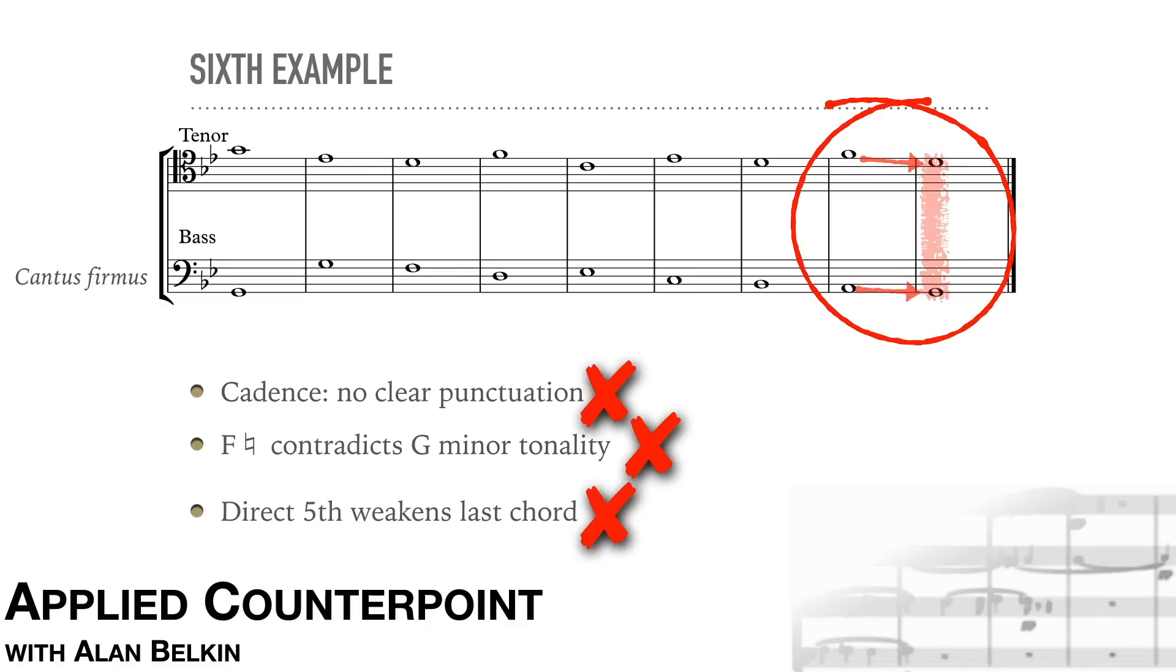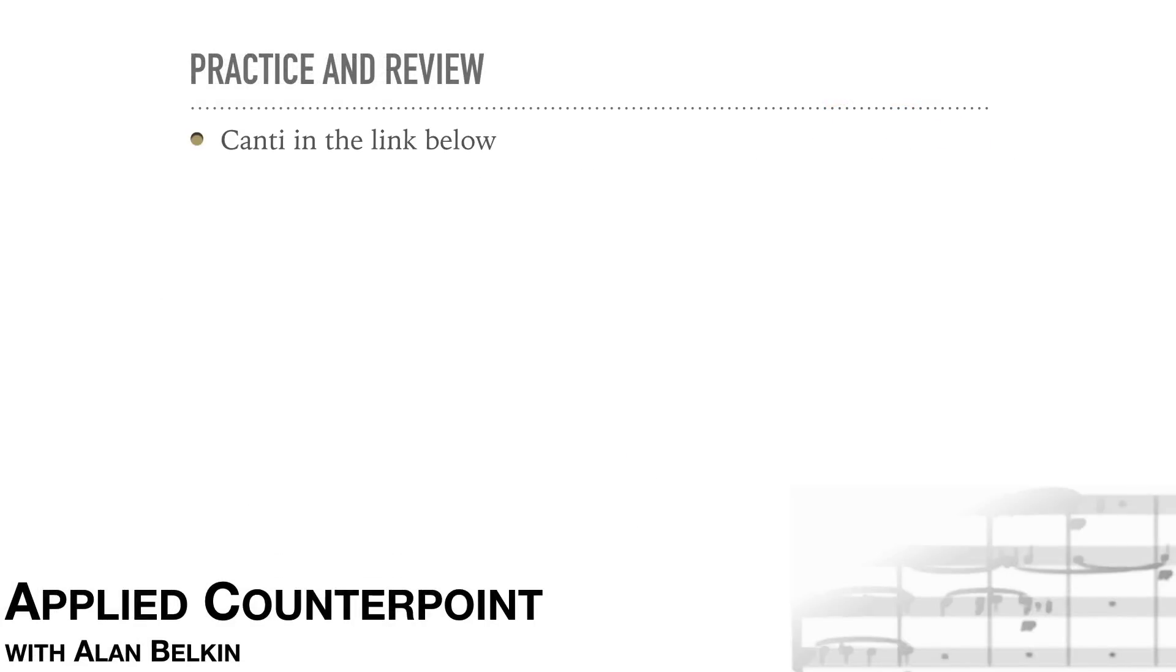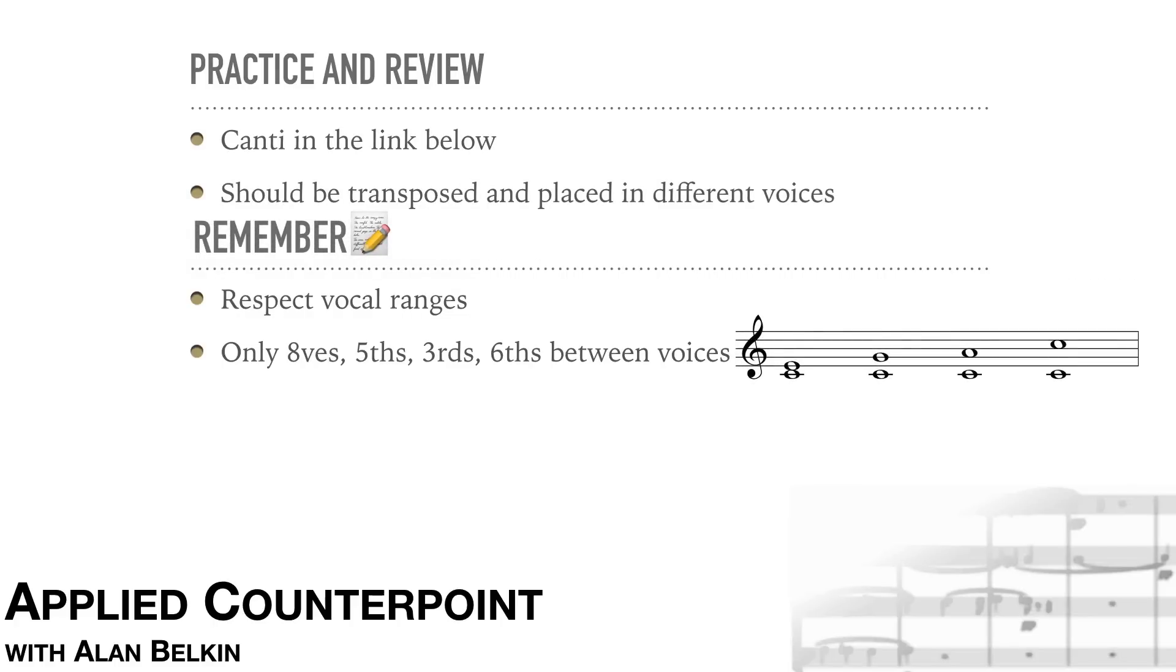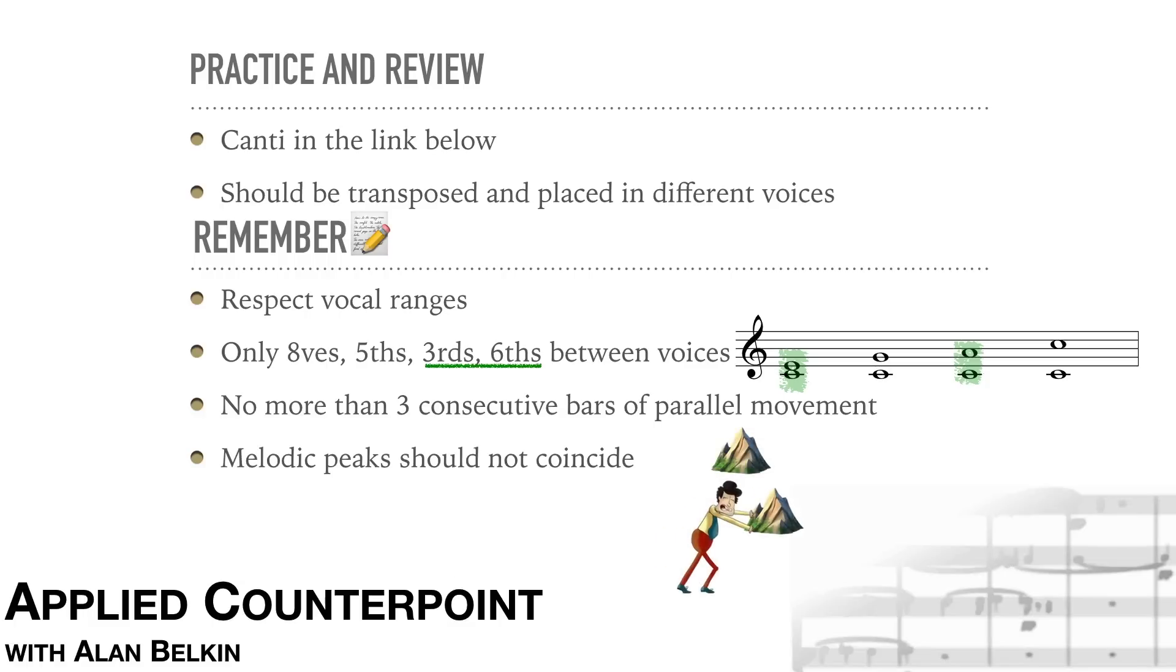Now it's time for the students to do some exercises. There's a PDF document with several canti available at the link below. The canti should often be transposed, since different keys place the voices in different parts of their respective ranges. Remember, respect the vocal ranges. Only octaves, fifths, thirds, and sixths between the voices for now. Aim for overall harmonic richness. Not more than three bars of parallel movement at a time. Melodic peaks should not coincide. And sing and play.